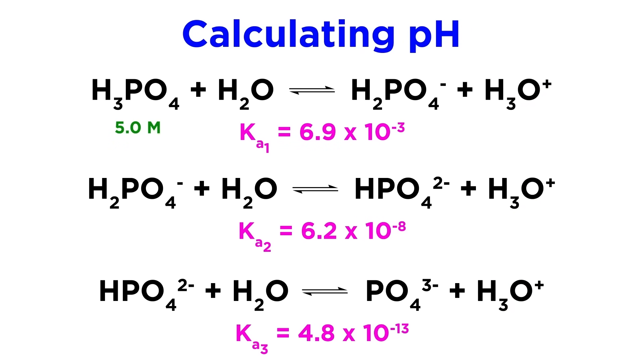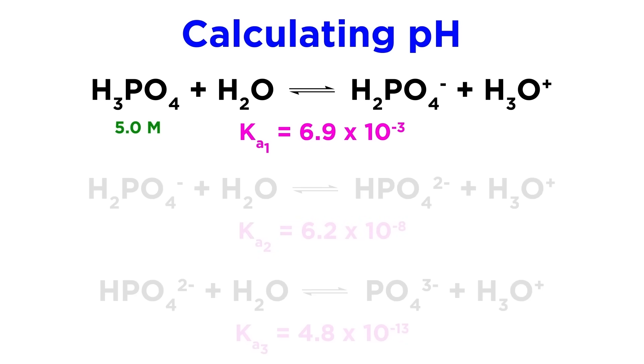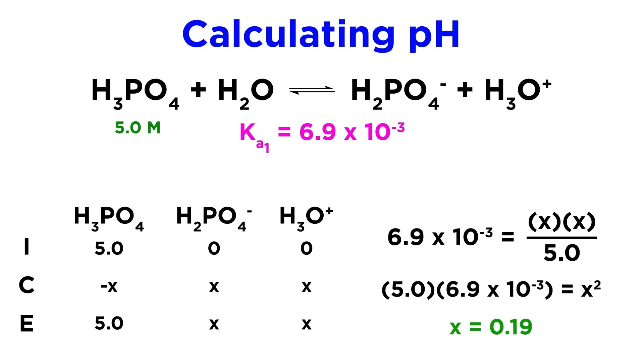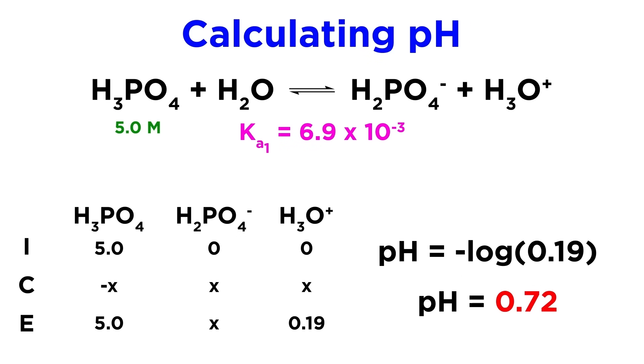However, in the case of a five molar solution of phosphoric acid, it is the case that the second and third deprotonations are negligible. We would set up the ICE box for the first equilibrium, plug in five as the initial concentration and zeros elsewhere, and then assign the relevant change and equilibrium values. We could again make the simplifying assumption to the denominator, do some arithmetic, and we get 0.19 molar as the hydronium concentration. This gives us a pH of 0.72.